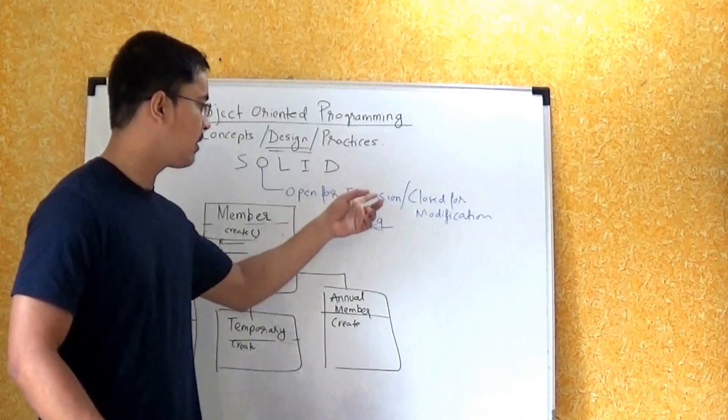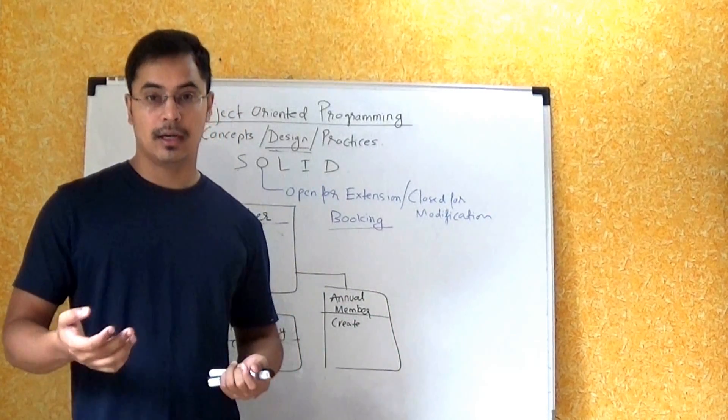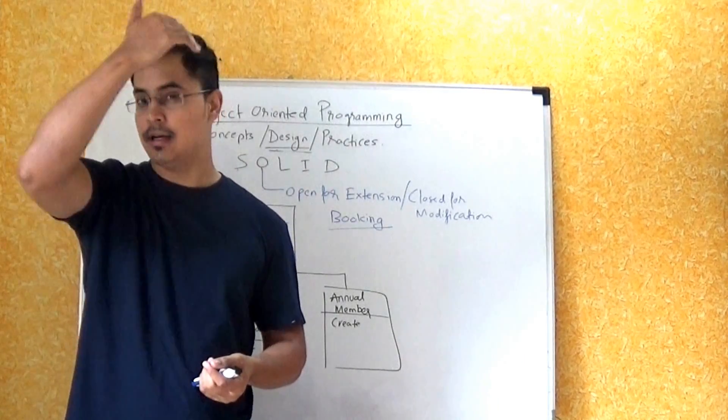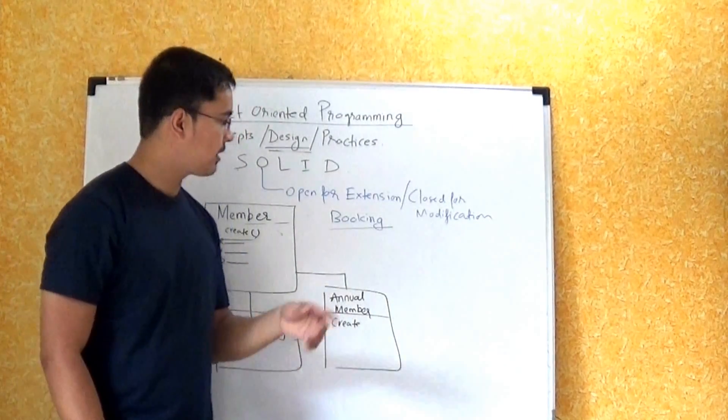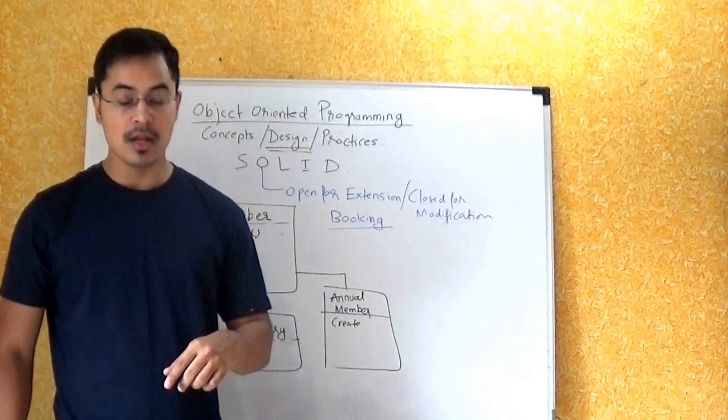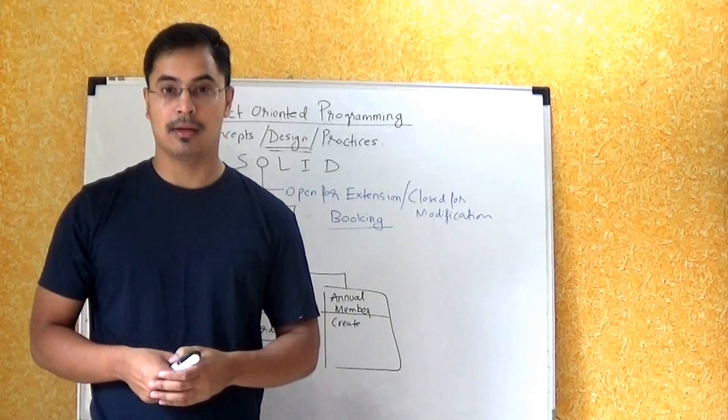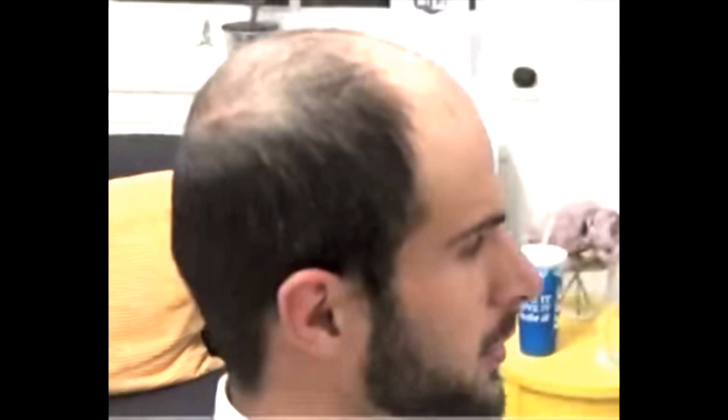there are two ways to treat hair loss problems. First you do hair transplant, which is against the principle of open for extension, closed for modification. What do they do in hair transplant? They take back the hairs from the back side and they put it somewhere on the front side where you have lost hairs. So I guess that is contrary to this principle.